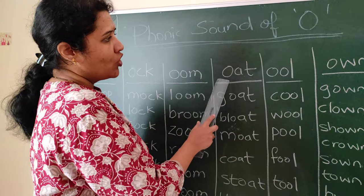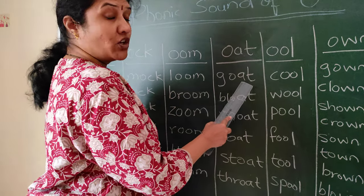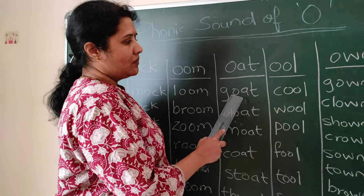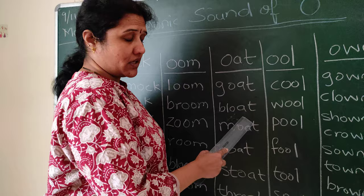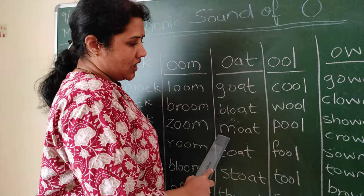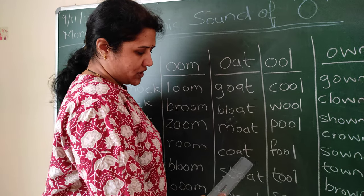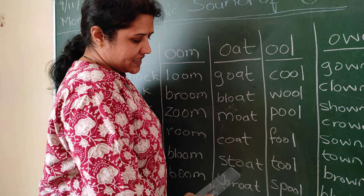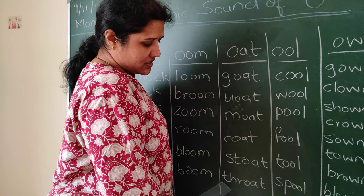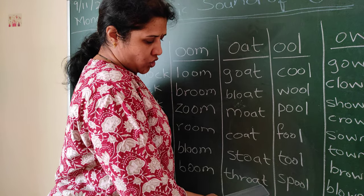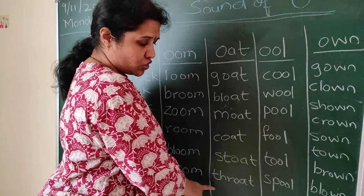The next sound is OAT. O-A-T — OAT. G-O-A-T — GOAT. What is the sound of letter G? GA plus OAT is GOAT. BL plus OAT is BLOAT. M plus OAT is MOAT. C-O-A-T — COAT. ST plus OAT is STOAT. T-H-R — THR plus OAT is THROAT. What is throat? This is throat.